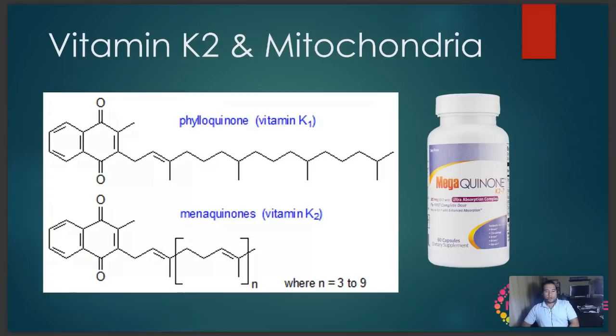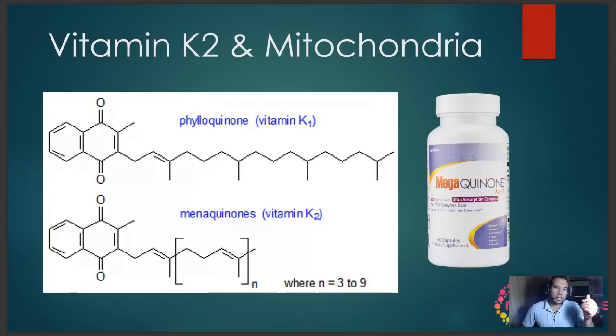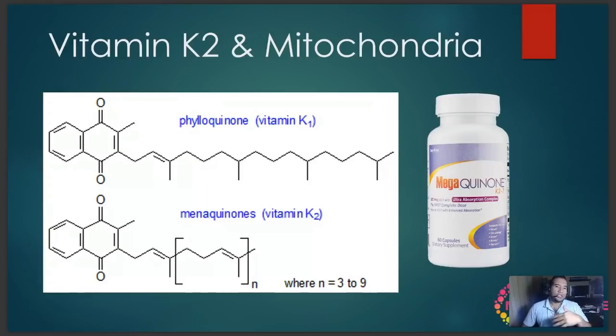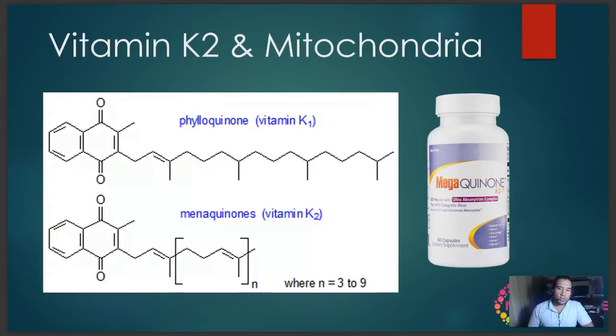Now let's talk about vitamin K2 in the mitochondria. This is a major area of our research. Just to distinguish — there are two major forms of K2. K1 (phylloquinone) is found in leafy green vegetables and functions in the liver for blood clotting. K2 is the extra-hepatic form of vitamin K, meaning it's the one that leaves the liver. It functions in the rest of the body at a cellular level, in virtually every part of the body, especially the brain, which has some of the highest natural concentration of vitamin K2.